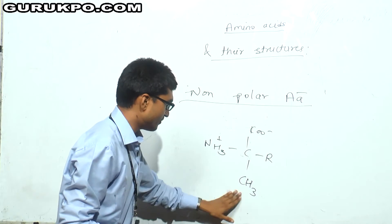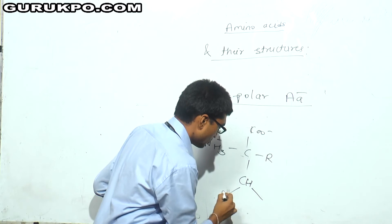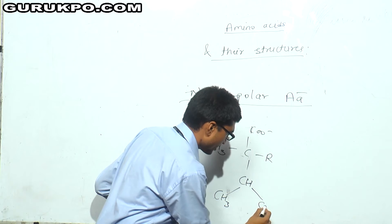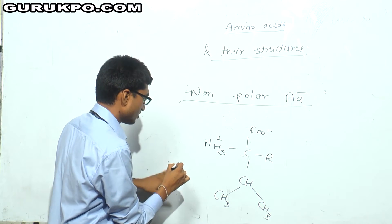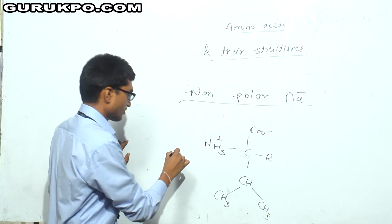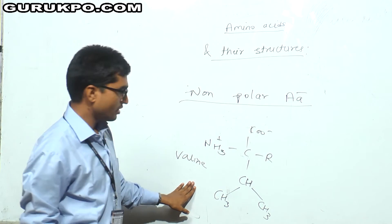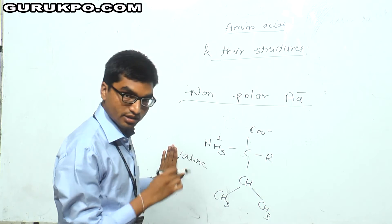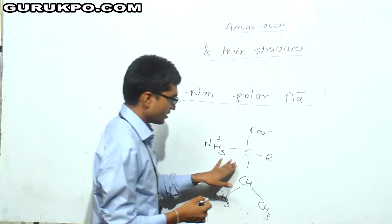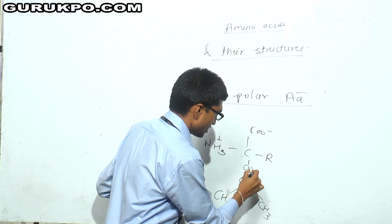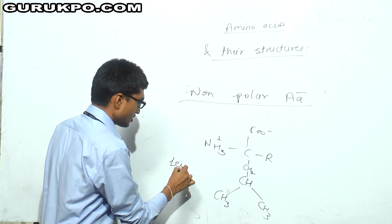If I replace both hydrogen valencies of the R group with two CH3 groups, what do I get? I will get valine. Then, if I place a CH2 group, this gives the structure of leucine.